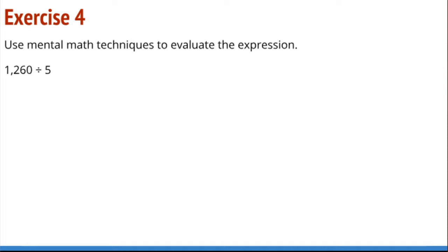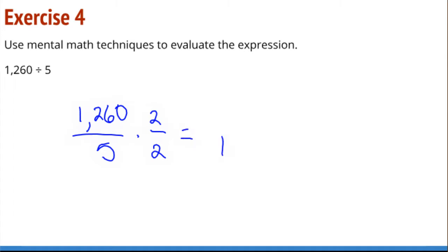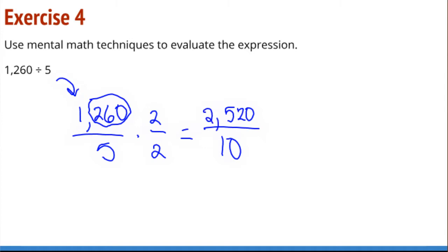Another 5 — I love 5s, they're awesome. If I do a little doubling here, I'll have a 10 to divide by, which is wonderful. I've got 260 here, which doubles to 520, and then a doubled 1,000 gives 2,520. Dividing by 10 gives 252. I love dividing by 5 — it's just a fantastic thing.